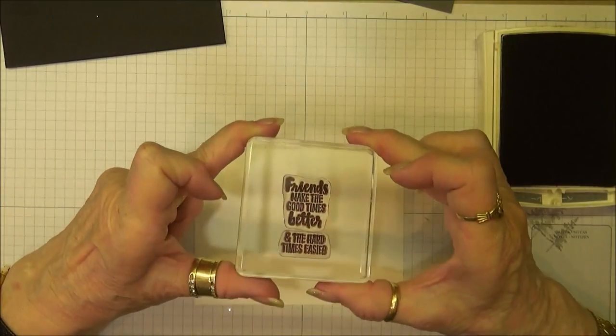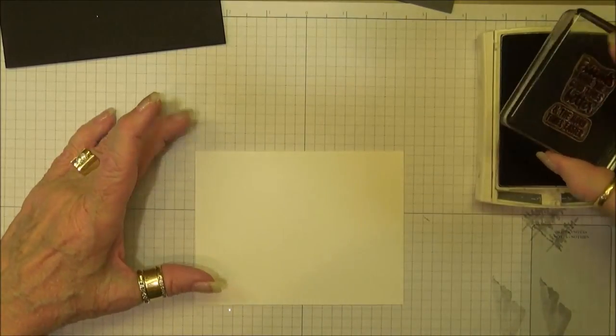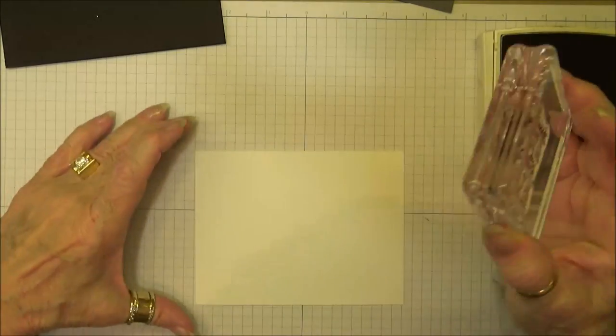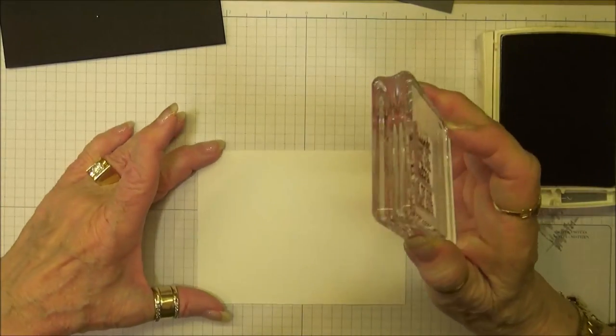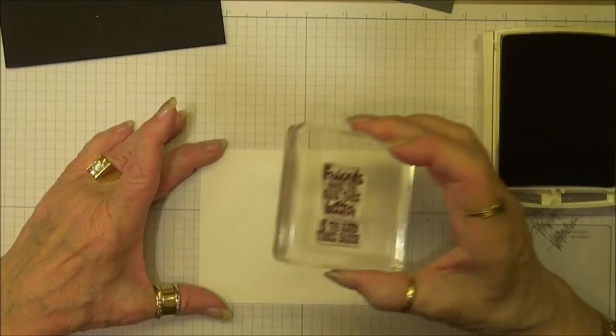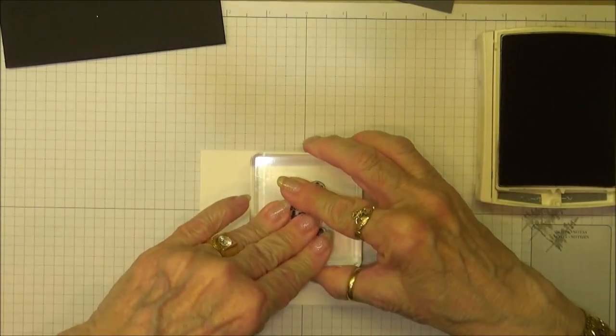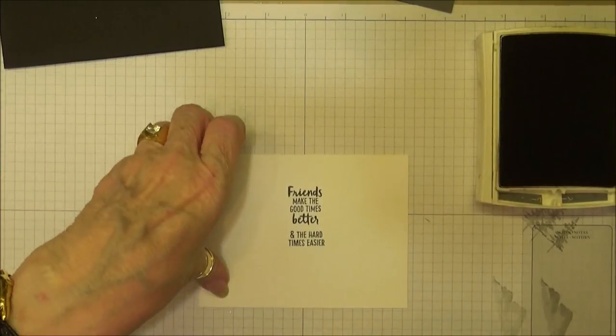I'm going to stamp the sentiment on the inside. You'll see I've mounted both stamps on one block—I think that makes it really nice because then you can get them all lined up prior to stamping and make sure they get stamped correctly. So we'll go ahead and stamp that down.